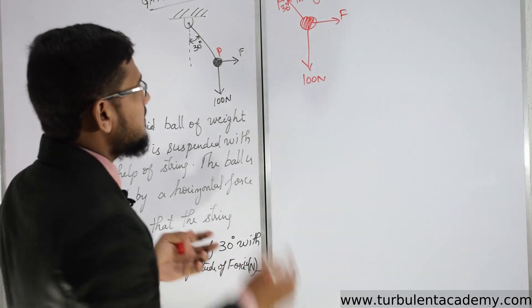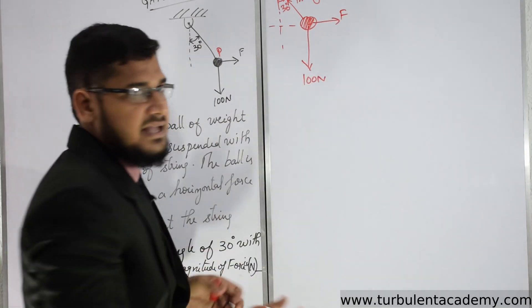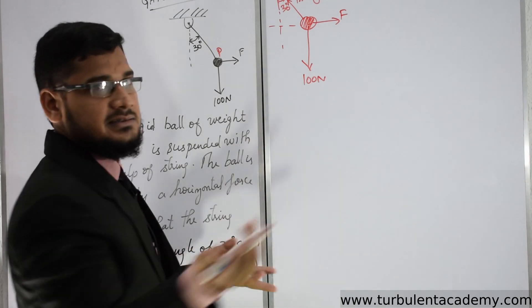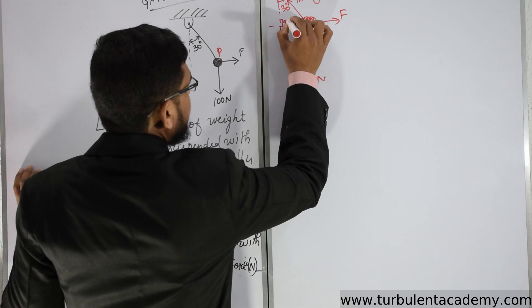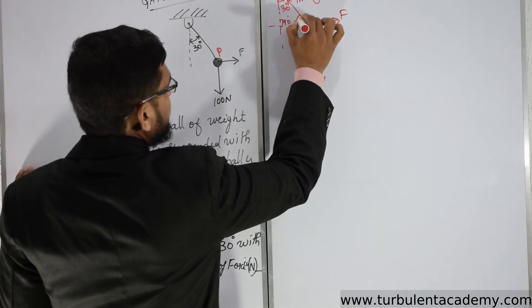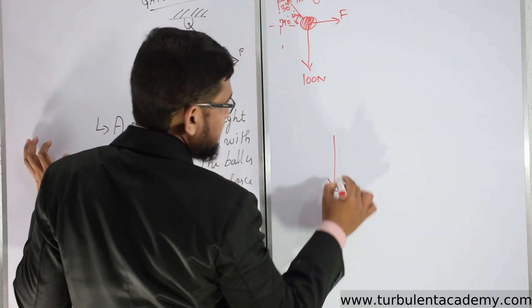So it's going to be very simple for us to get the angles. Angle of a triangle is 180 degrees from standard geometry. So this is going to be 90, this is 30, this is going to be 60. So I'm going to draw Lamy's theorem. This is 100 Newtons.